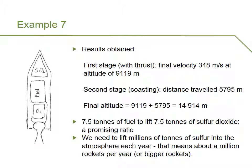What this worked example demonstrates is that we could lift 7.5 tonnes of sulphur dioxide using just 7.5 tonnes of fuel — roughly an equal quantity of fuel to sulphur dioxide lifted. That is quite a promising ratio, bearing in mind that even if we used kerosene for that fuel and emitted carbon dioxide, 7.5 tonnes of sulphur dioxide can, in terms of radiative forcing, counteract perhaps 7.5 tonnes of carbon dioxide — which is very much greater than any carbon dioxide emitted by the rocket fuel itself.